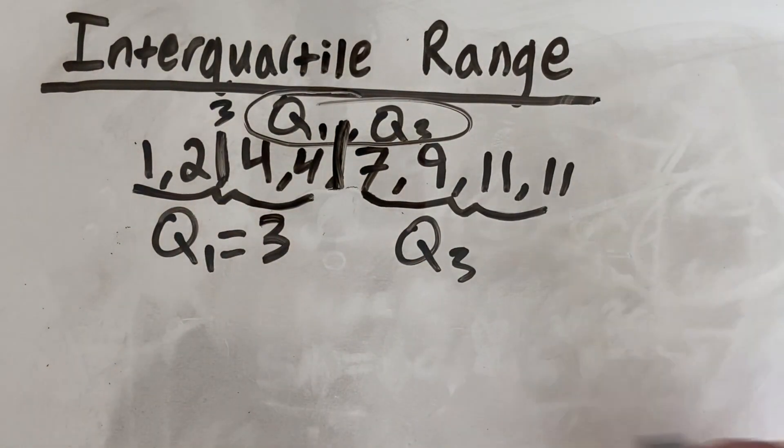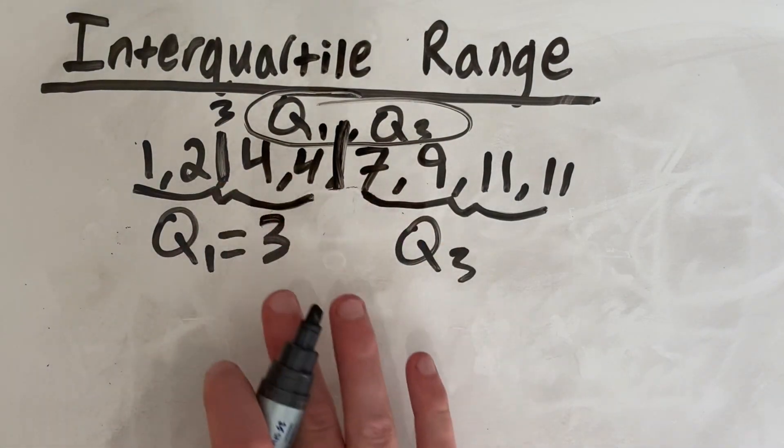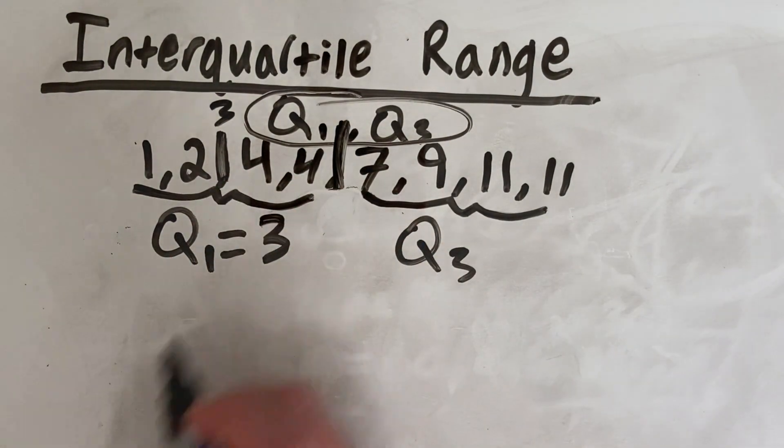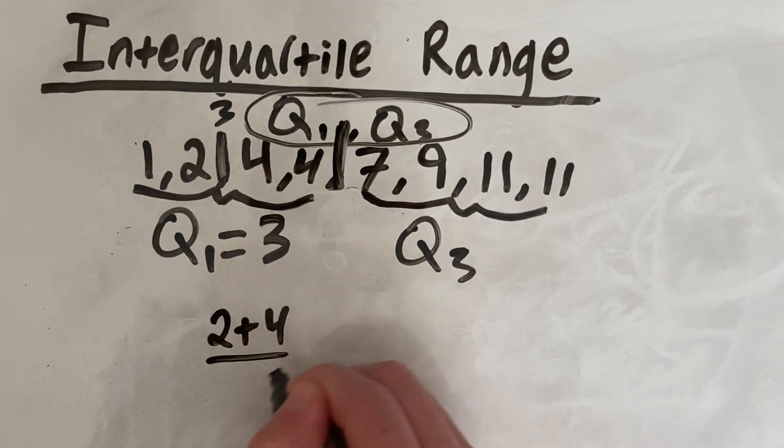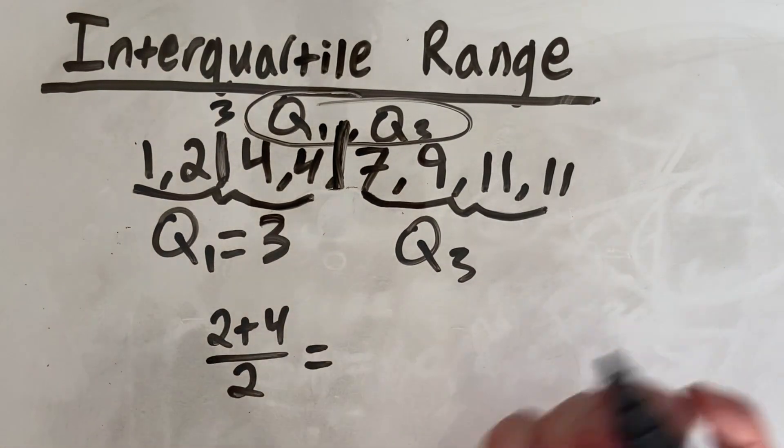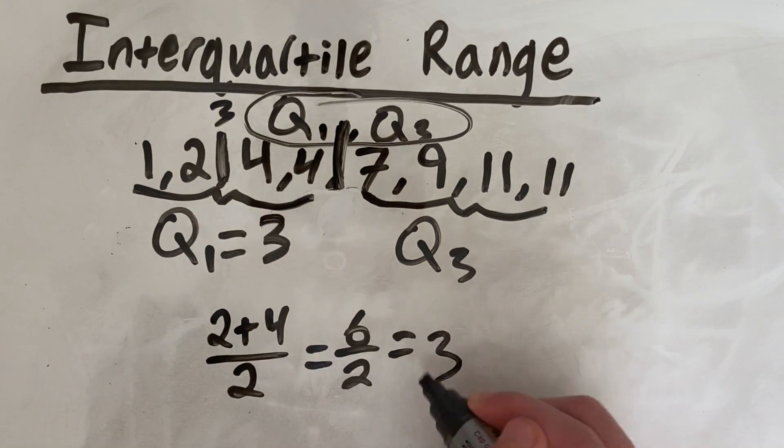If you're working with larger numbers, it might be a little more difficult just to look at it and see that's the middle number. So a quick trick you can do is you can add them together and divide them by 2. So as you can see, that's 6 over 2, which is 3.